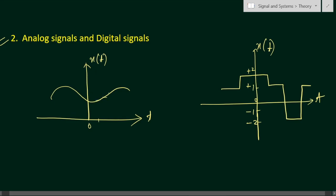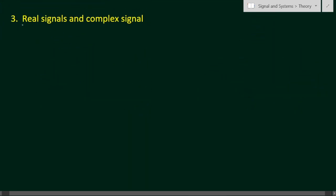An analog signal can take any value in its range, whereas a digital signal can take only fixed values. For example, a binary signal is a digital signal that takes only 0 or 1. A polar signal takes minus one and plus one — some finite number of values.